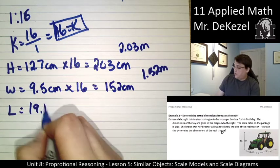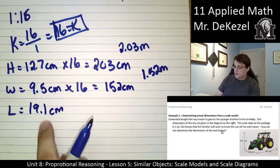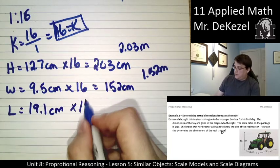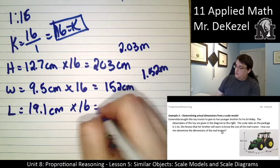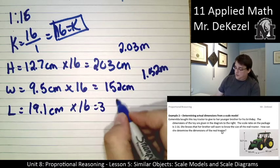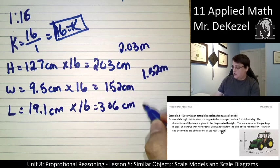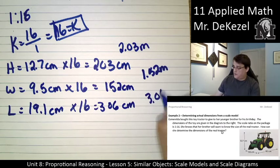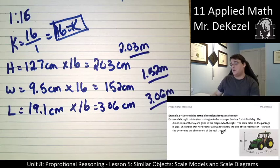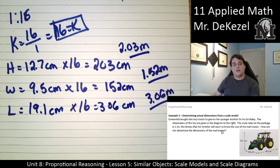And then the length of the tractor, we're given 19.1 centimeters. This is the largest length that we're given. And it should end up being the largest overall. If it's not, check your work. But we found it to be 306 centimeters, or 3.06 meters. So those are the dimensions of the real tractor.